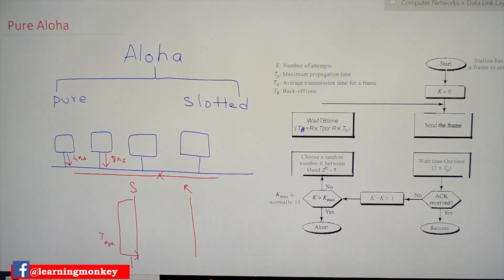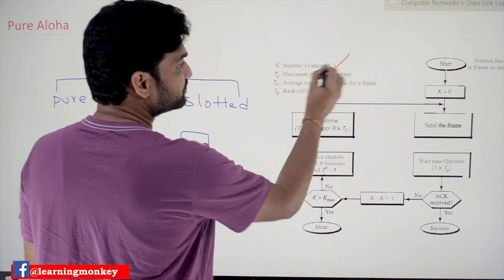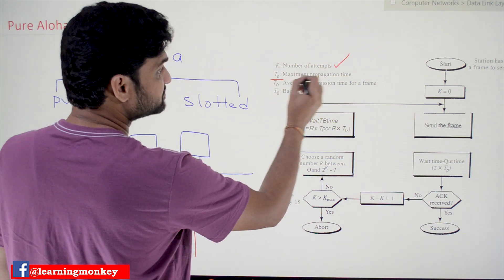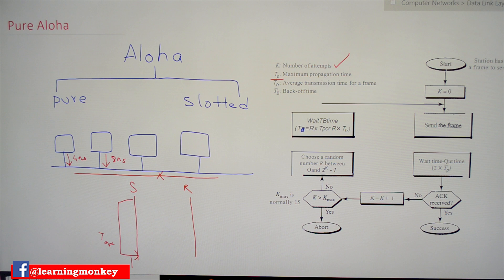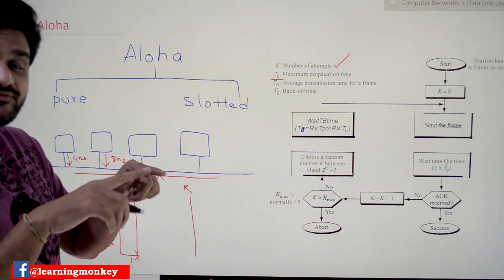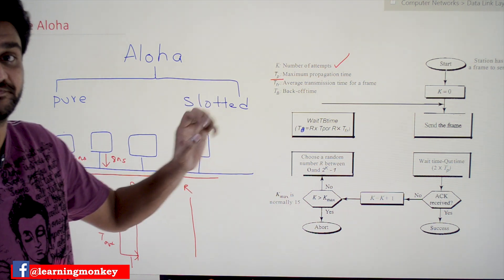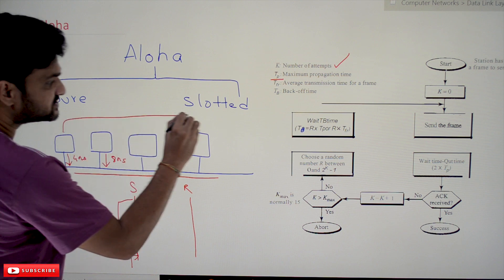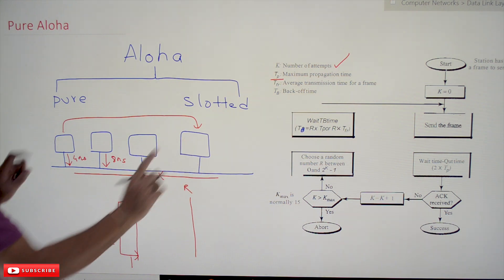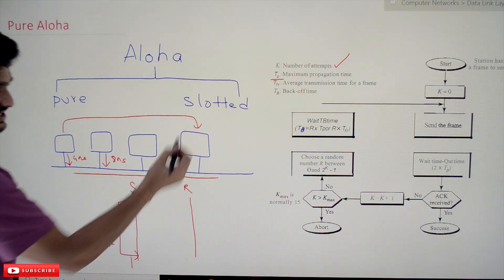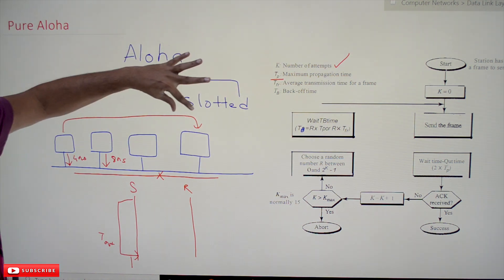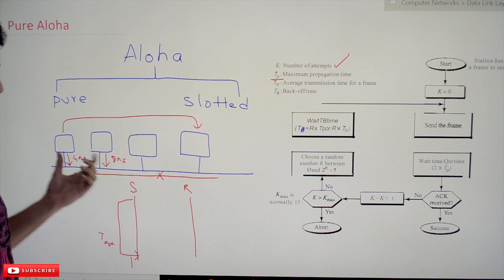Before understanding this protocol, we will try to understand some basic terminology. 'k' is the number of attempts made by the system. 'tp' stands for maximum propagation time — it is the maximum amount of time taken by a data frame to travel from one system to another within the network. To understand it simply, consider the two farthest systems in the network. The maximum propagation time, represented by tp, is the time taken to transmit data between those two farthest systems.